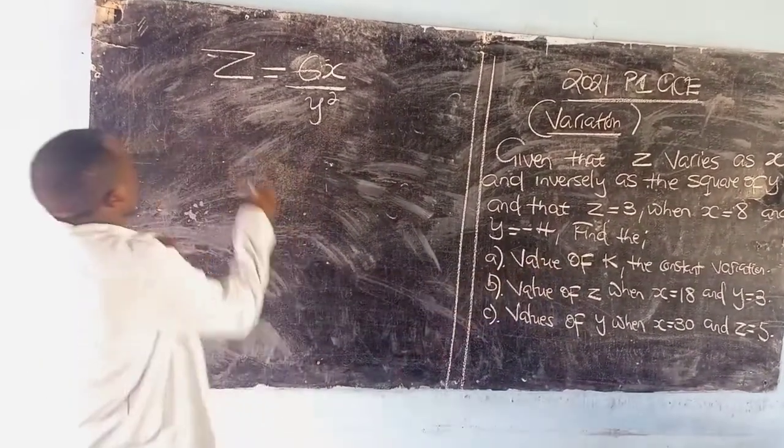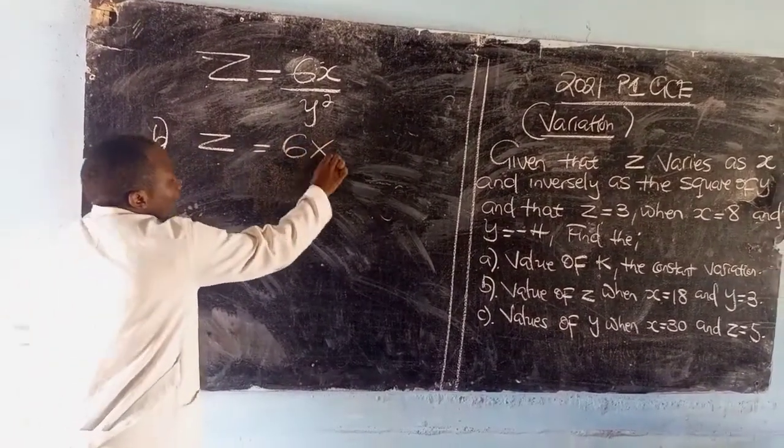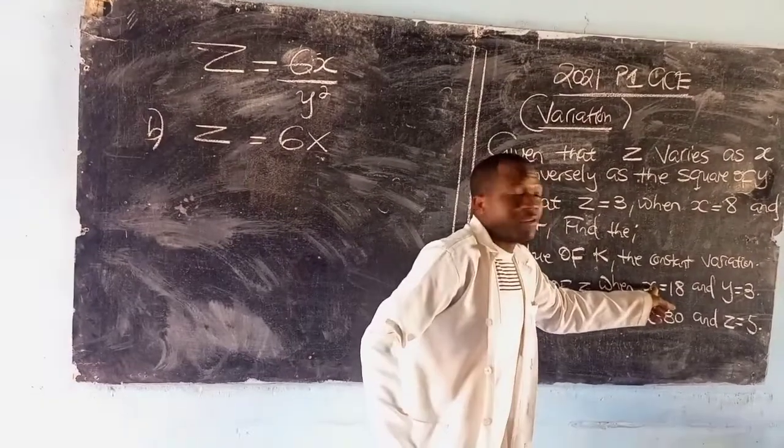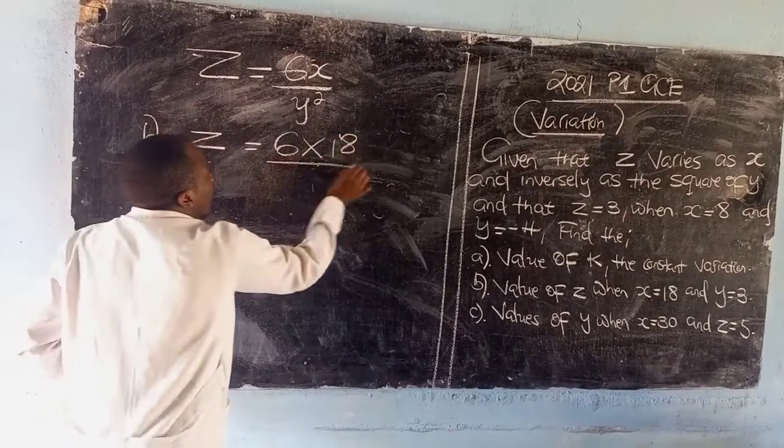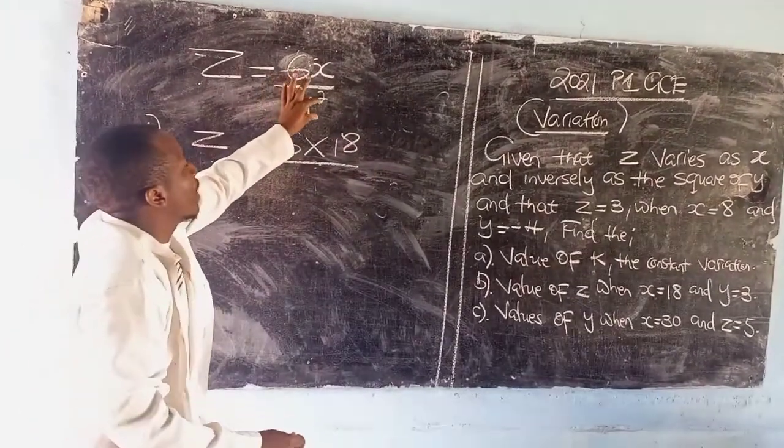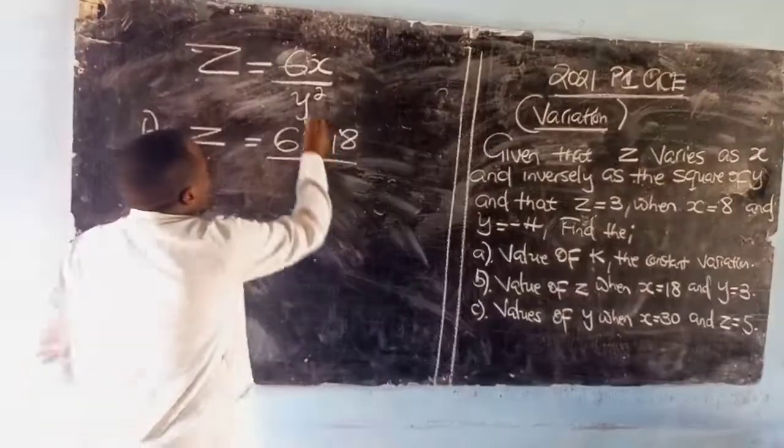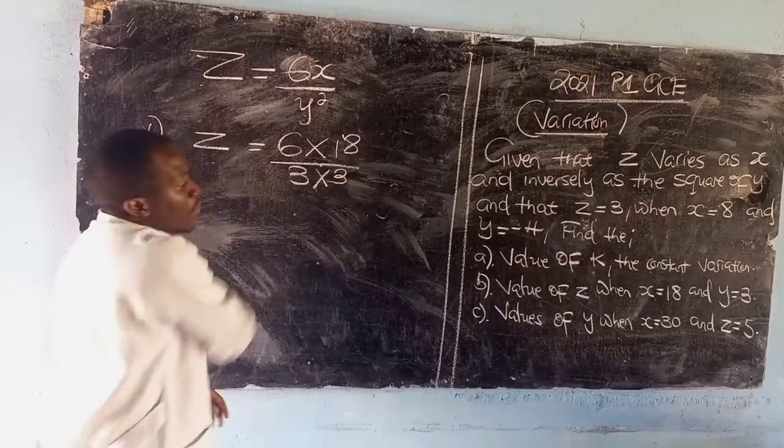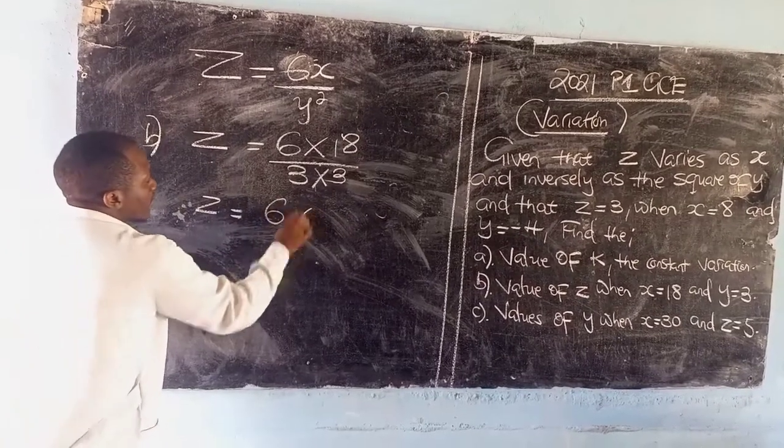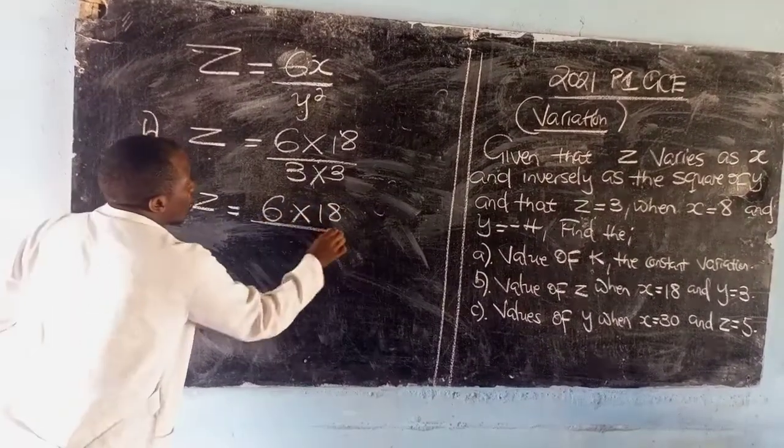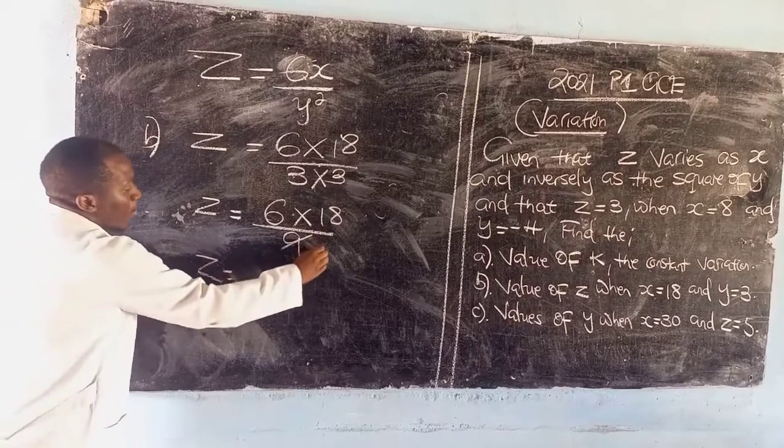Part B: find the value of z when x equals 18 and y equals 3. So we want z, which we are going to say equals 6 multiplied by, let x be equivalent to 18, so x we are going to replace with 18 over, remember y is raised to the power 2 meaning its substitution will be replaced twice, so the value of y is 3 multiplied by 3. Then we are going to say z equals this is going to be 6 multiplied by 18 over 3 times 3 is going to give us 9.